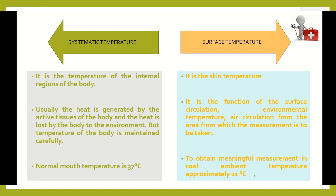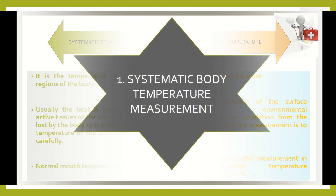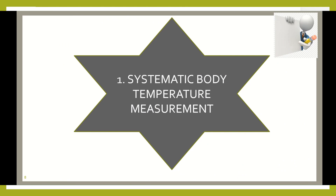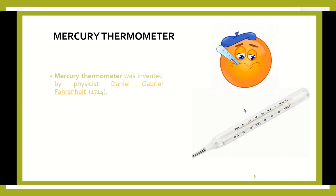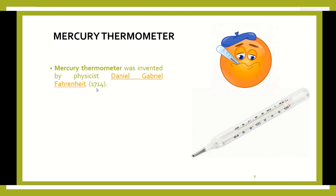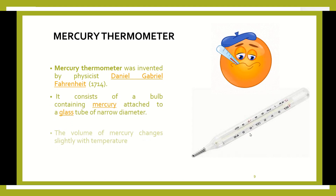Now we understand what is systematic temperature and what is surface temperature. We will move to the different devices used to measure them. The first device for systematic body temperature measurement is the mercury thermometer. It is a glass tube filled with mercury, invented by Daniel Gabriel Fahrenheit in the year 1714. The volume of mercury changes with respect to the body temperature.